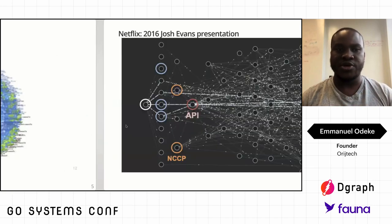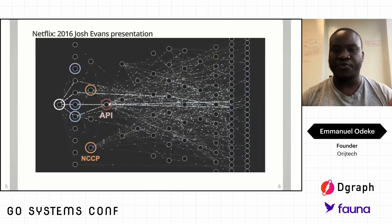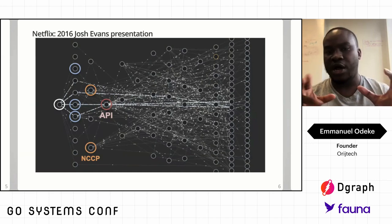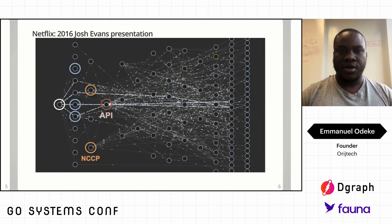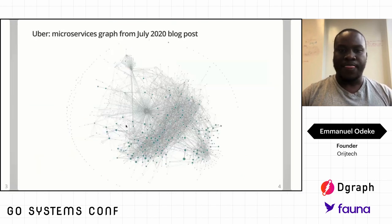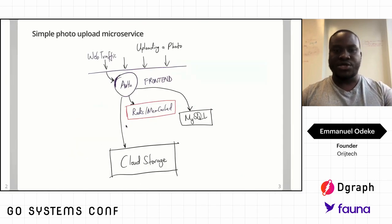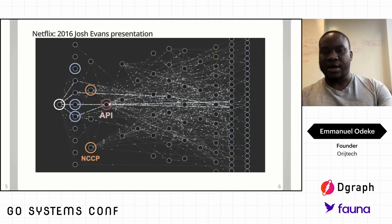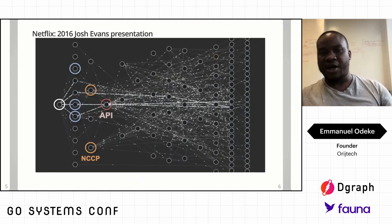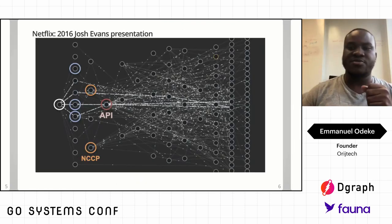The next one is also from a presentation from Netflix, showing how their microservices talk to each other. So already, we started from a simple scenario and got to this. These are exhibits of how fast complexity builds up.